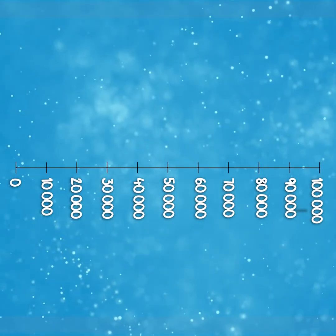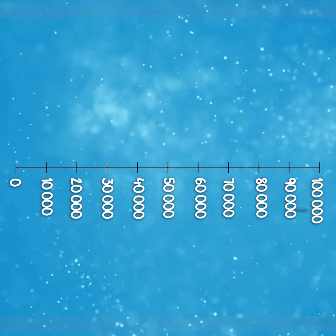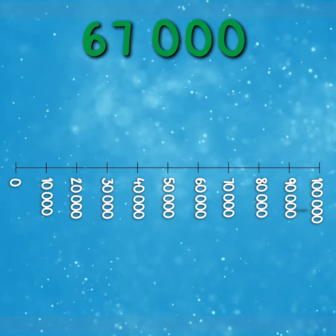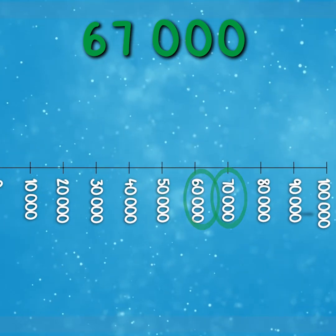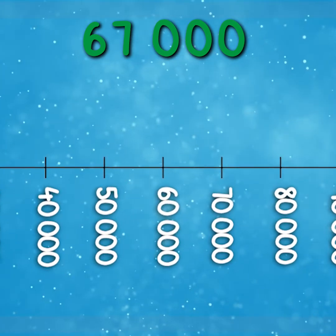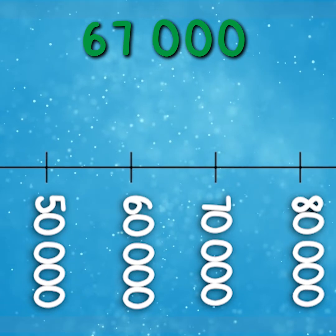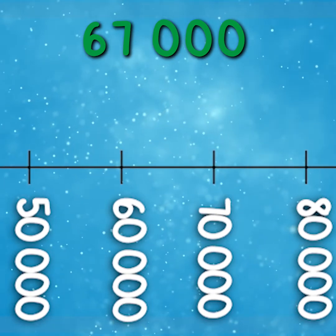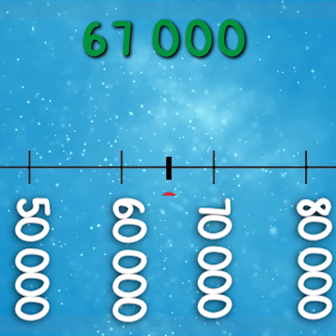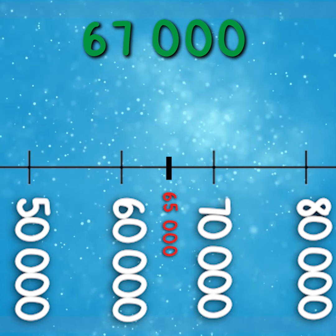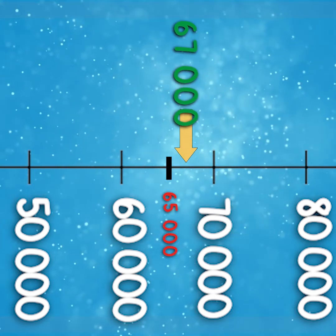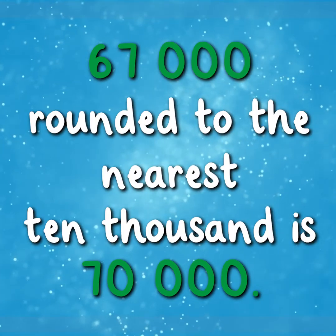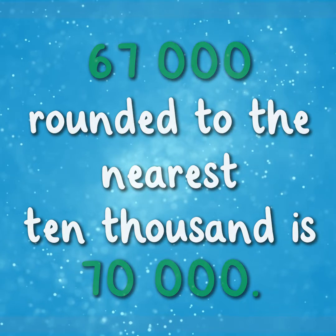Using our number line, we're going to round 67,000 to the nearest 10,000. We already know that 67,000 sits between 60,000 and 70,000, and we know that 67,000 will round to its closest multiple of 10,000. The midpoint between 60,000 and 70,000 is 65,000. We can see on our number line that 67,000 is closer to 70,000 than it is to 60,000, and therefore 67,000 rounded to the nearest 10,000 is 70,000.